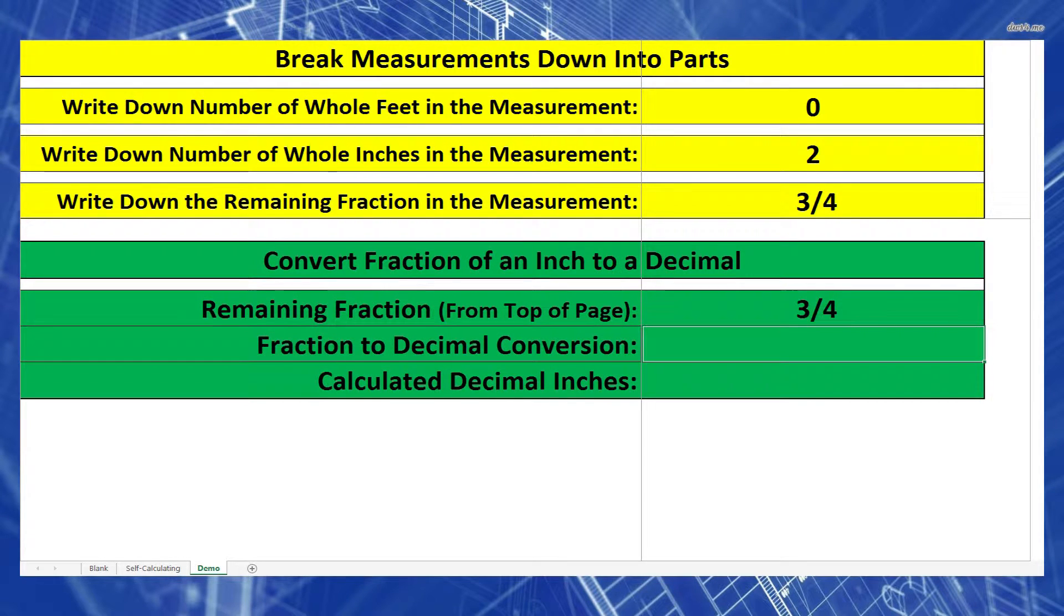Now I want to focus on the smallest number, which will be the fraction. To convert a fraction into a decimal is quite easy. You take whatever's on the top of the fraction, which is three, and divide it by whatever's on the bottom, which is four. Three divided by four equals 0.75 inches.